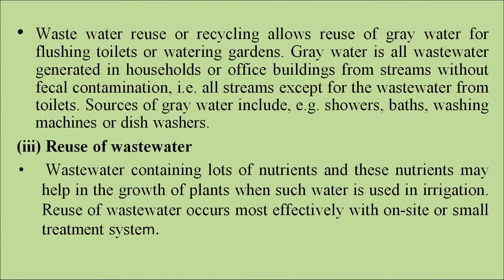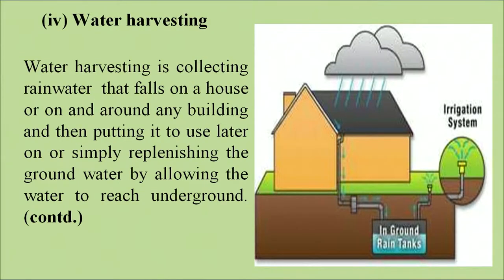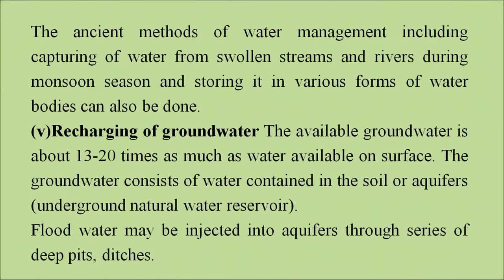Reuse of wastewater. Wastewater contains lots of nutrients, and these nutrients may help in the growth of plants when such water is used in irrigation. Reuse of wastewater occurs most effectively with on-site or small treatment systems. Water harvesting is collecting rainwater that falls on house rooftops and buildings and putting it to use later, or simply replenishing the groundwater by allowing the water to reach underground. Ancient methods of water management including capturing water from swollen streams and rivers during monsoon season and storing it in various forms of water bodies can also be done.